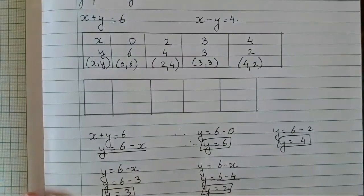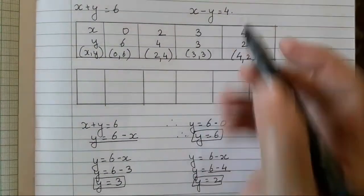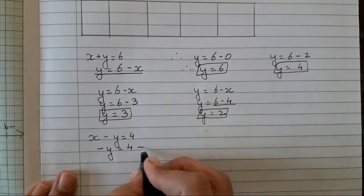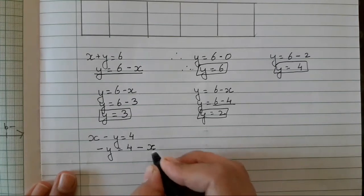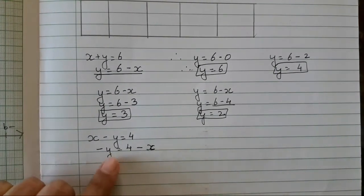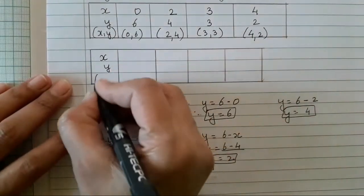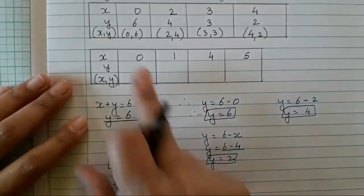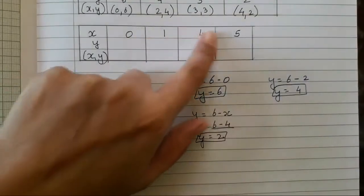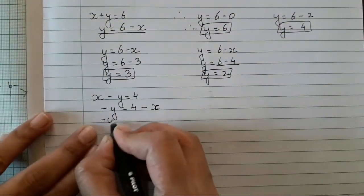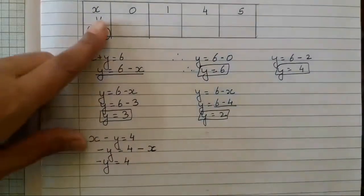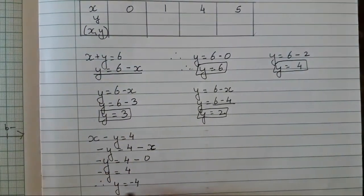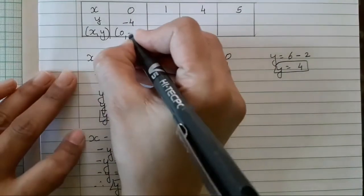Now for the second equation x minus y is equal to 4, we rearrange to minus y is equal to 4 minus x. I am going to take x values 0, 1, 4, 5. Substituting x = 0: minus y = 4 minus 0 = 4, therefore y = minus 4. So the pair is (0, −4).